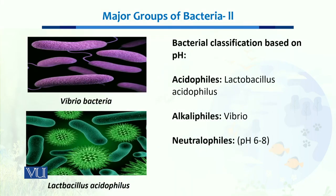On the basis of pH, bacteria are classified into three types. First are acidophiles; examples include Lactobacillus acidophilus. Lactobacilli are a group of bacteria that help in the conversion of milk into yogurt.